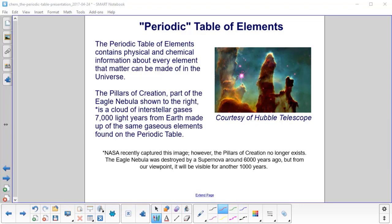The periodic table of the elements contains both physical and chemical information about every element of matter that can be made in the universe. And that's quite the claim. However, here's one piece of evidence that shows we're probably onto something.